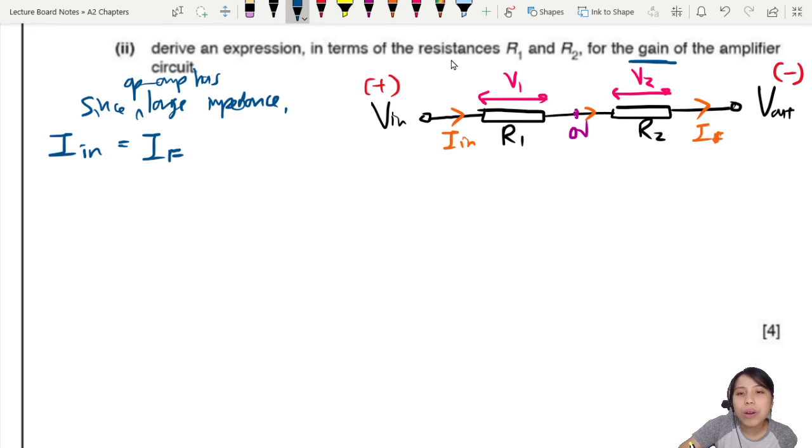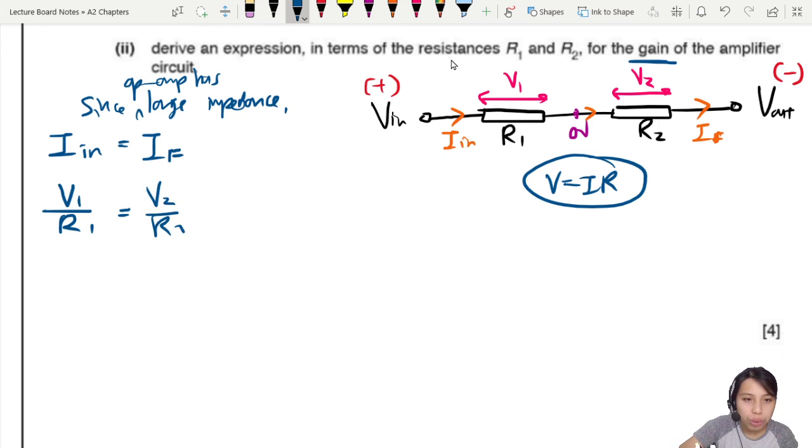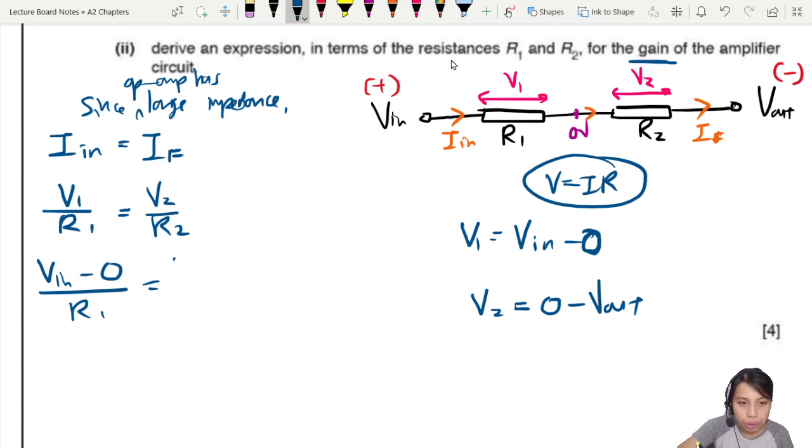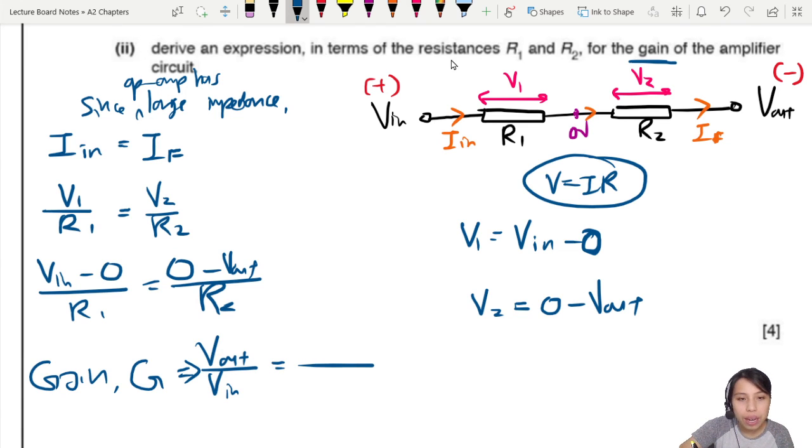From there, we can say Ohm's law, right? All these are resistors. So V equals to IR can be used everywhere. So I will be V1 over R1 equals to V2 over R2. But we want this in terms of V_in and V_out. So we need to know that V1 will be V_in minus the ground, which is zero. The purple color virtual earth there is zero. And we need to know that V2 will be zero minus V_out. So we sub that in. We will have V_in minus zero over R1 equals to zero minus V_out over R2. And the last step, we rearrange for gain. G, which is V_out over V_in equals to the resistor R2 over R1. Don't forget a negative sign there.